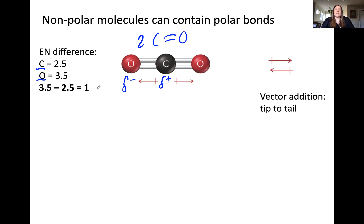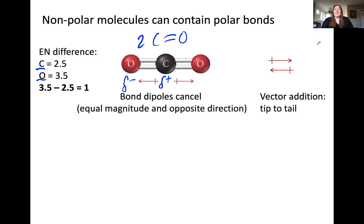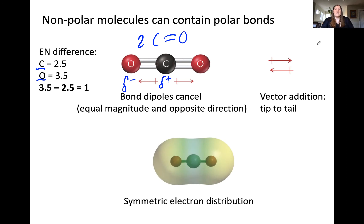Now we can add the vectors together via vector addition, which requires tip-to-tail addition — we line up the tip of one vector with the tail of the other. Because the vectors are equal and in opposite directions, the bond dipoles cancel. Looking at an electrostatic potential map of carbon dioxide, you can see a symmetric electron distribution, where the more yellow-orange colors represent higher electron density on the partially negative oxygens and the blue-green colors represent lower electron density on the partially positive carbon.